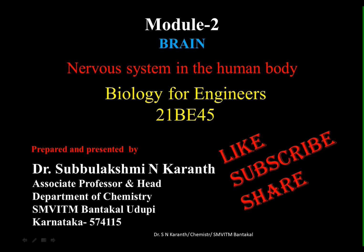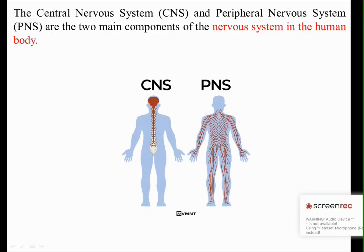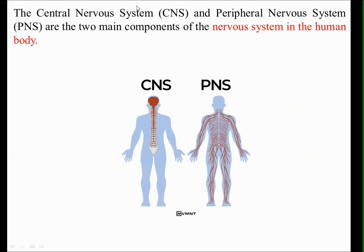In this video I will discuss the nervous system in the human body, related to the central nervous system and the peripheral nervous system, and the function of this nervous system. The two main components of the nervous system are the central nervous system, or CNS, and the peripheral nervous system.